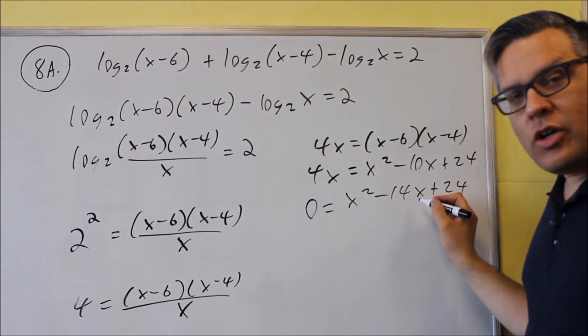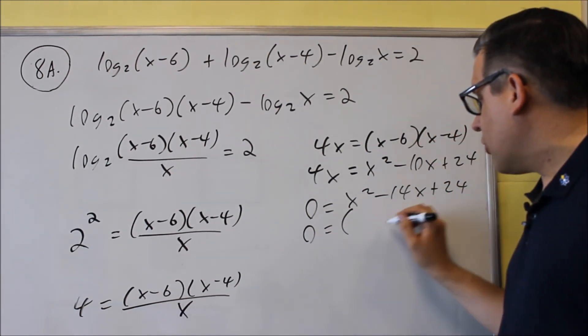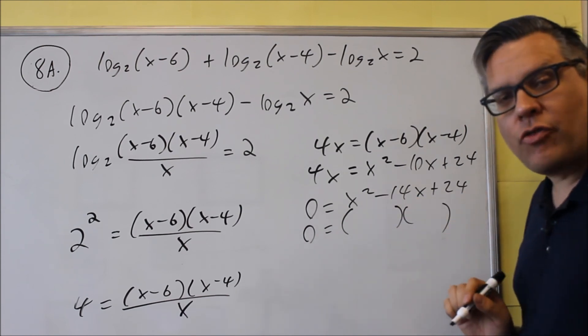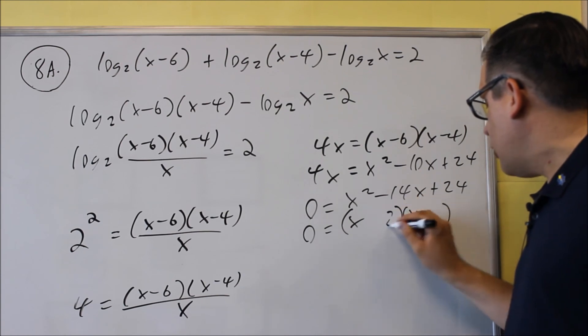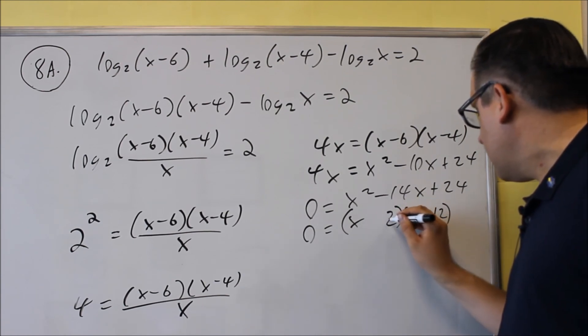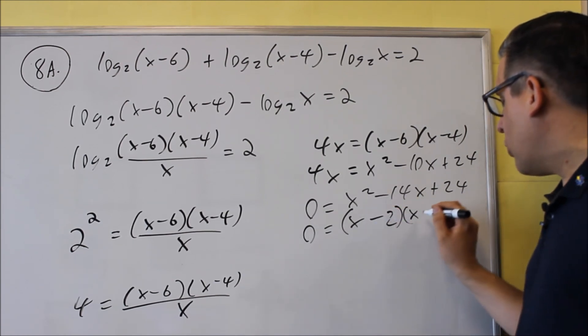So at this point, we now want to factor. Okay, so we're looking for two factors that multiply to make twenty-four and add to be fourteen, and these are going to be two and twelve, and we're going to make both of them negative.